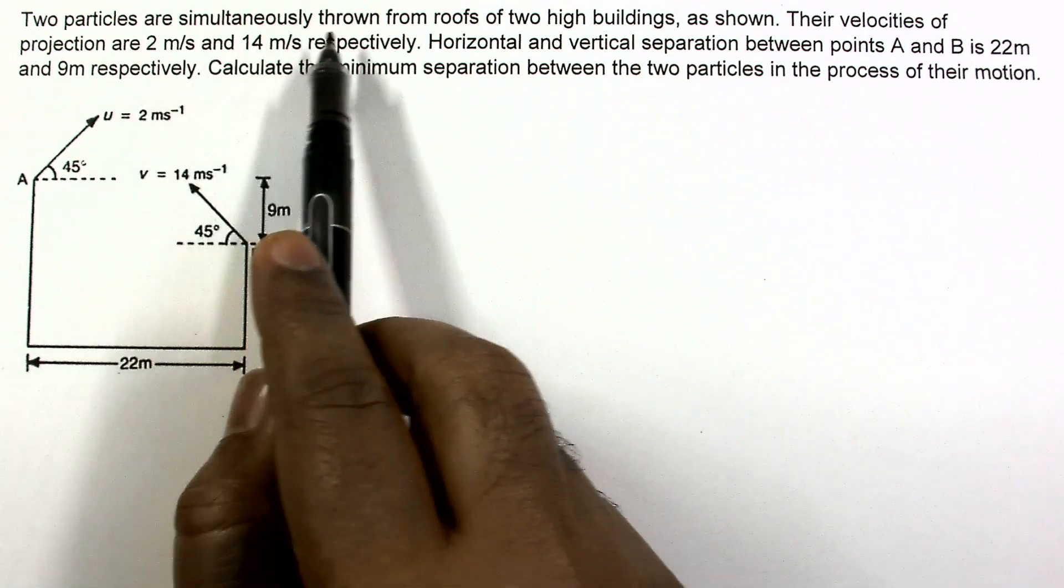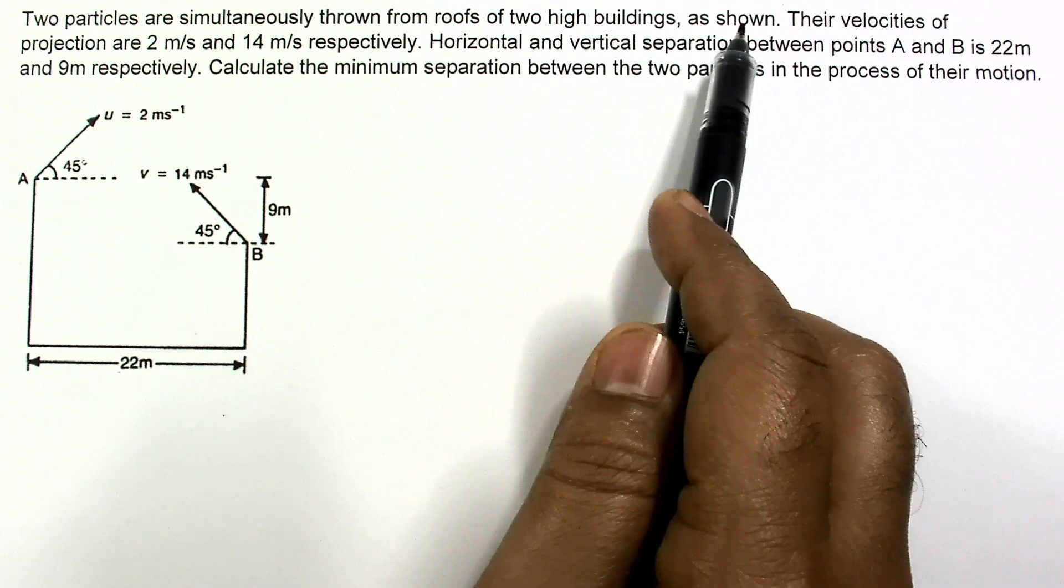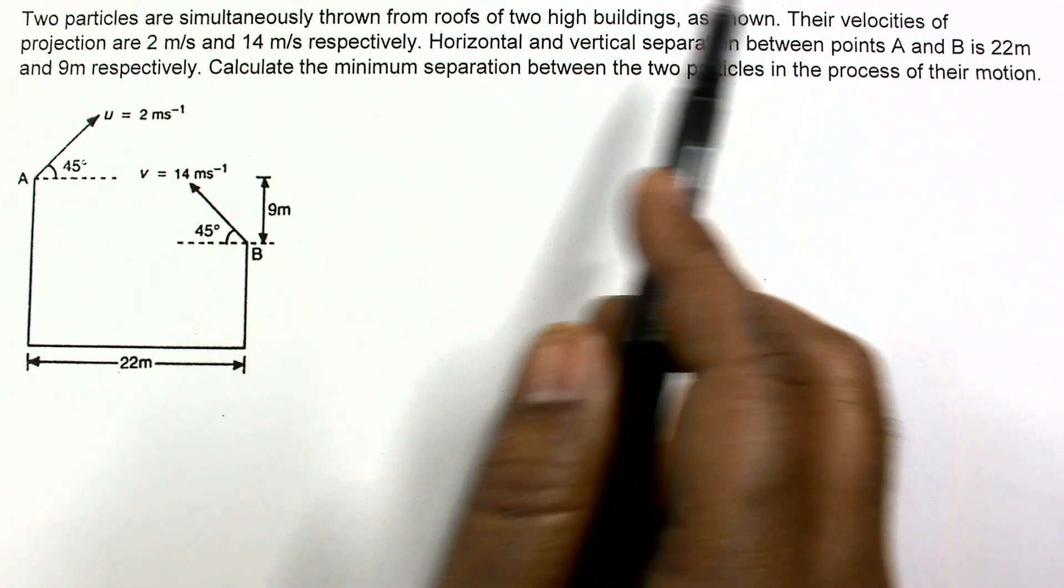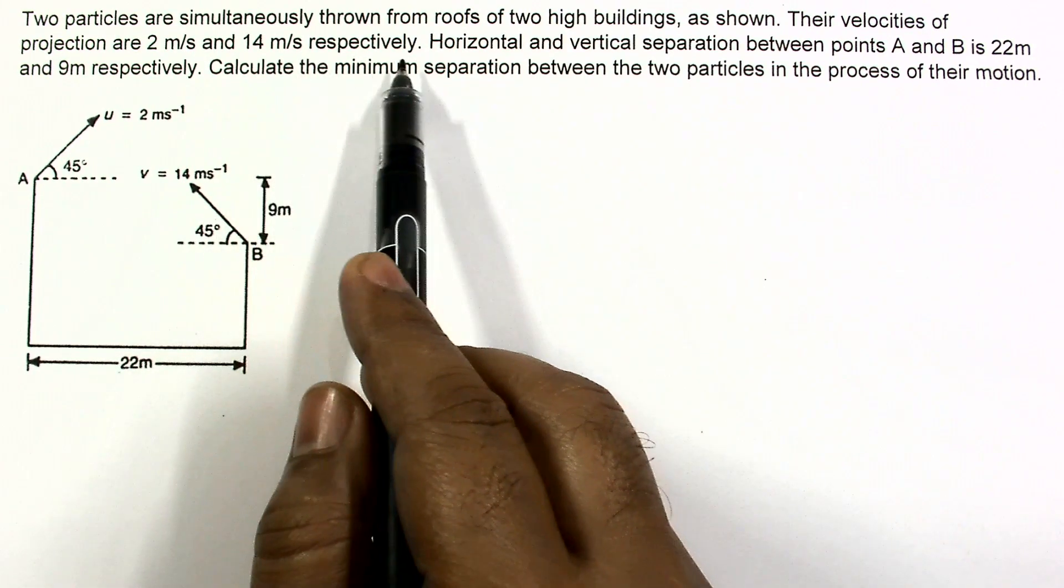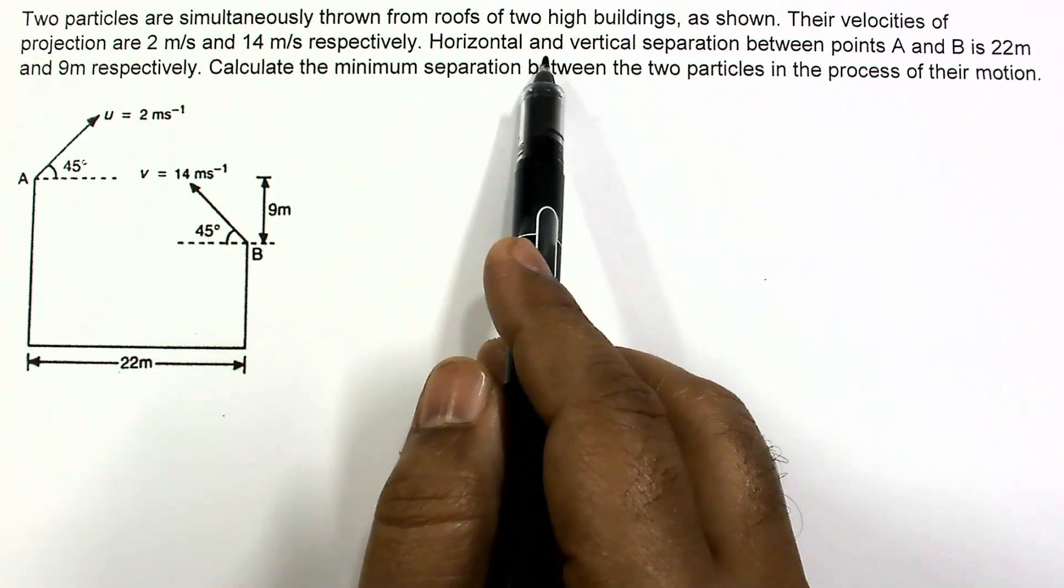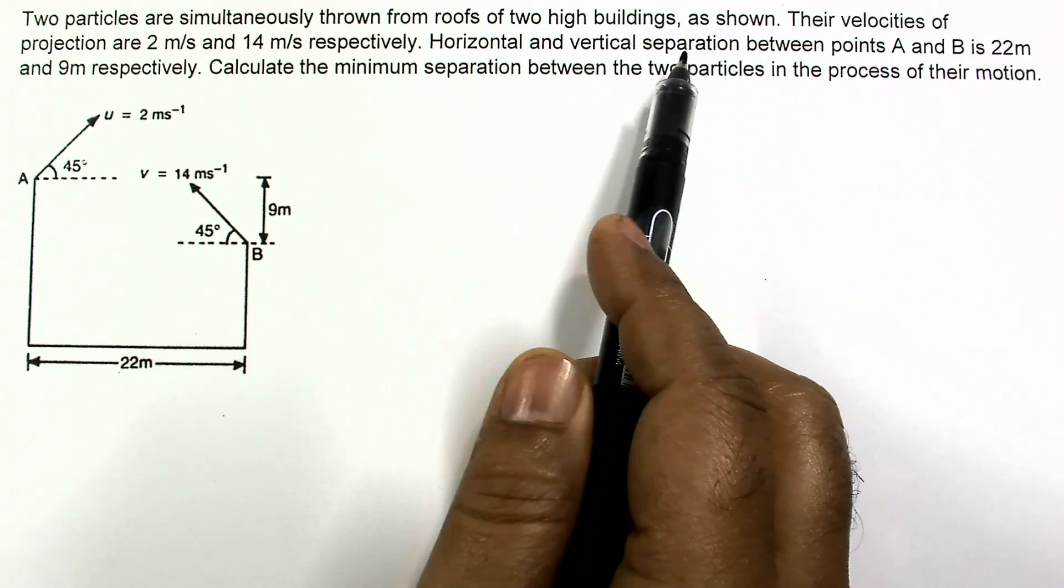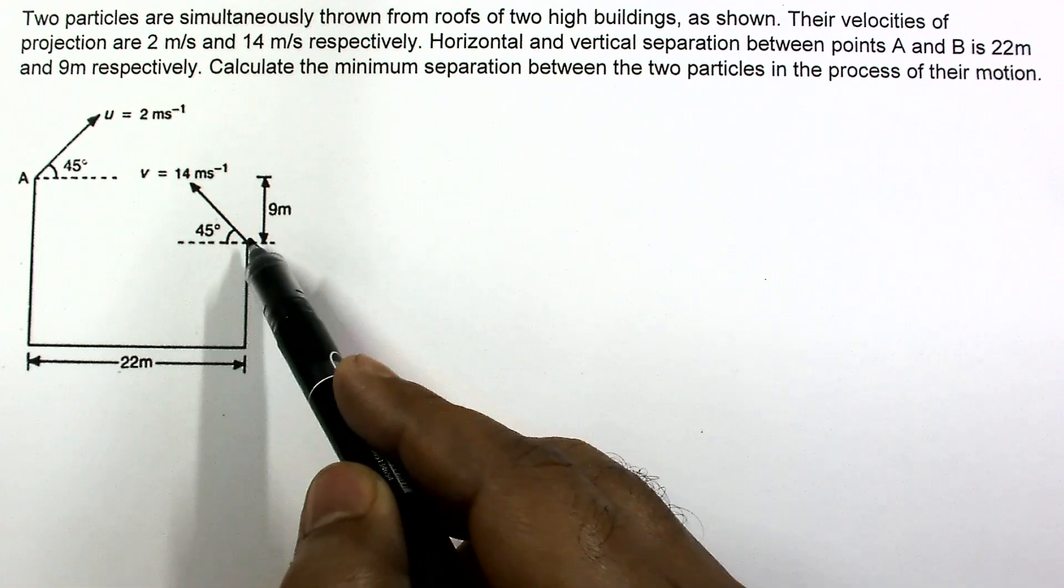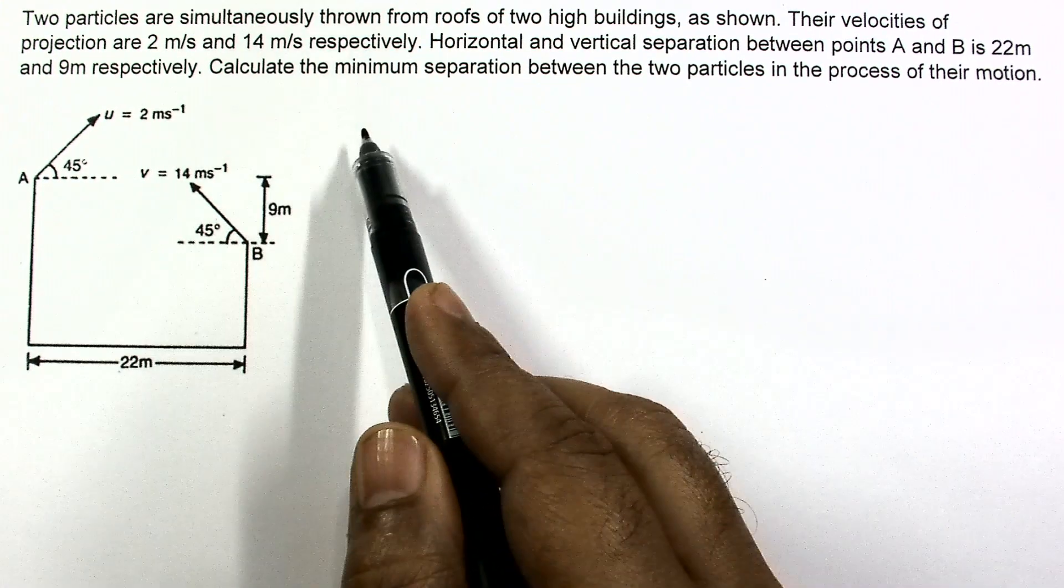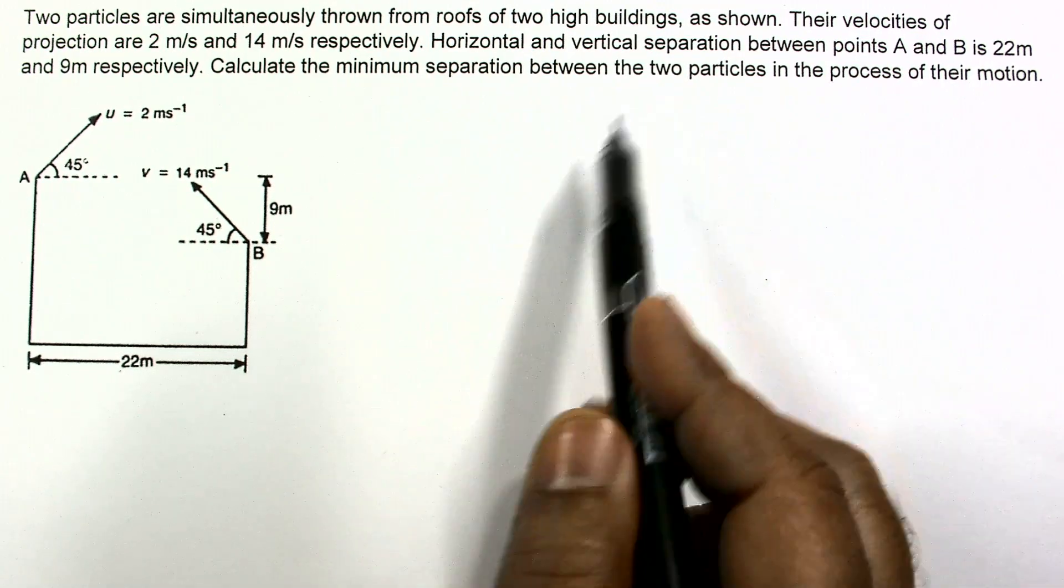In this problem, two particles are simultaneously thrown from roofs of two high buildings as shown in the figure. Their velocities of projection are 2 meters per second and 14 meters per second respectively. Horizontal and vertical separation between points A and B is 22 and 9 meters. Calculate the minimum separation between the two particles in the process of their motion.